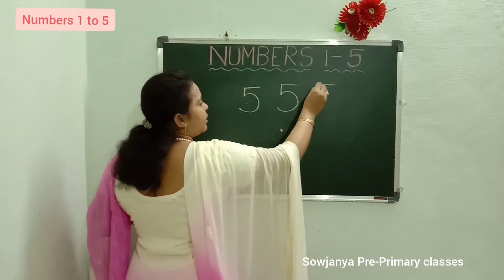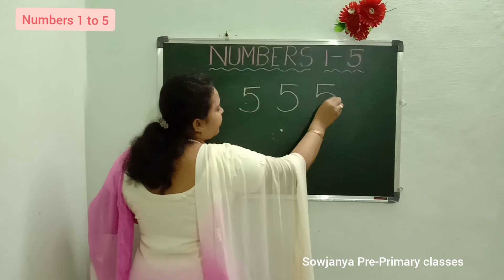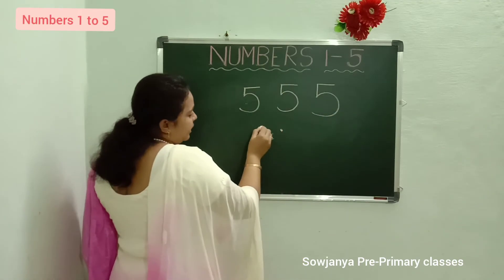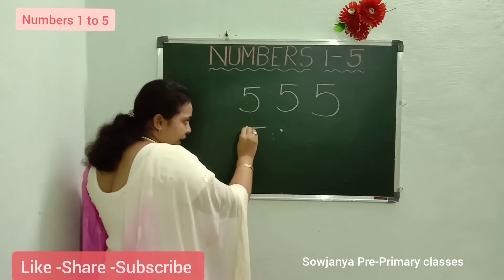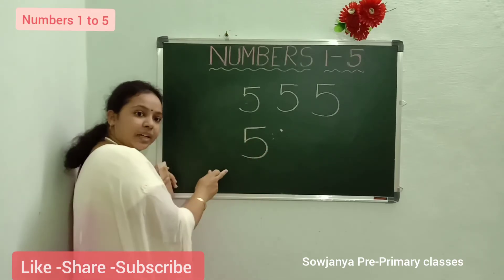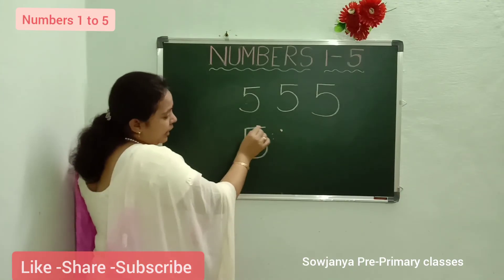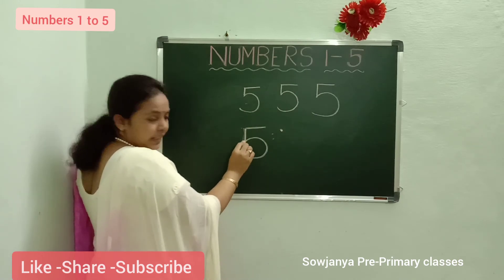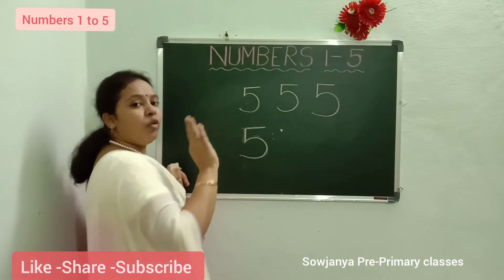Sleeping line. Small standing line. And write left curve. 5. Again we will write. Sleeping line — sleeping line should be right to left. Standing line. And write left curve. 5. What is this number? 5. How to write 5? Sleeping line, from right to left. Then again standing line. And left curve. What is this number? 5.